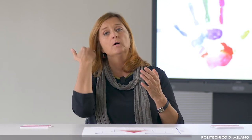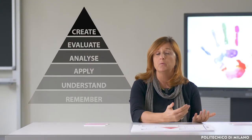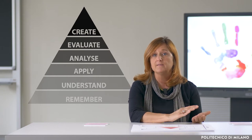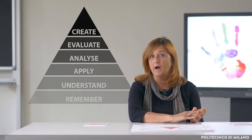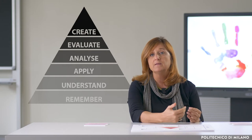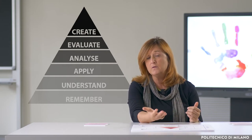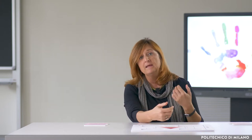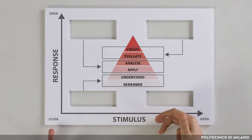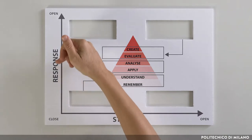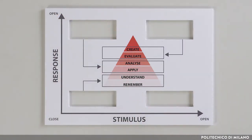If we use the revised version of Bloom's Pyramid to categorise the different kinds of intended learning outcomes, we notice that there are some tests that are more appropriate to observe certain learning outcomes than others. Tests, furthermore, can be categorised on the basis of the way they cross the type of stimulus they suggest with the type of response that is required from students.